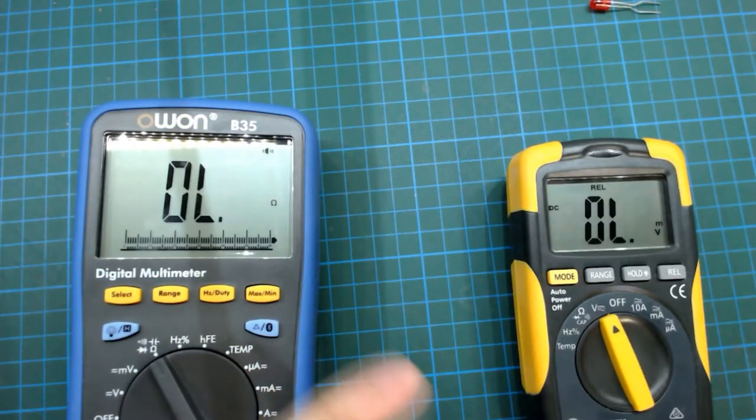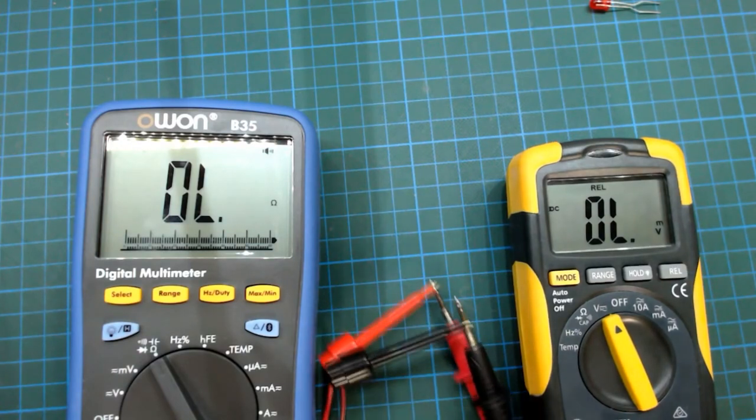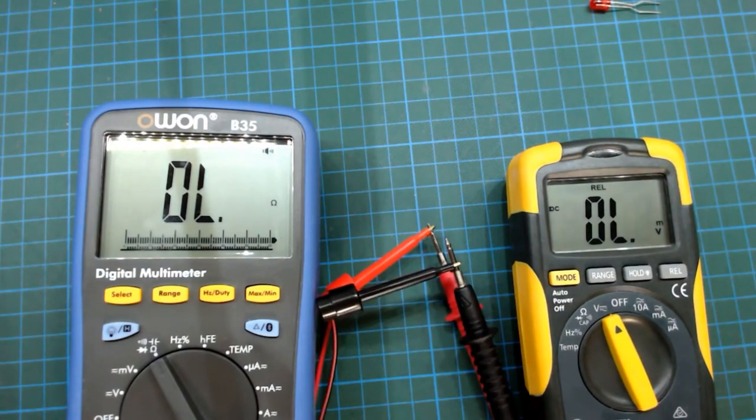A diode could also trick a continuity test. So if you think a diode could be in the way of your test, swap the probes around and see if you get continuity in both directions.